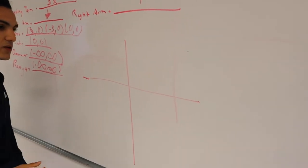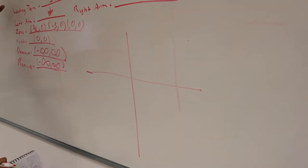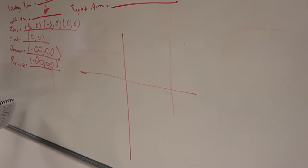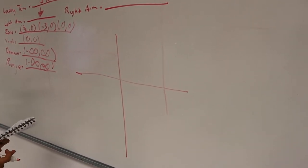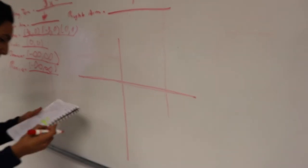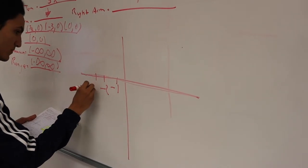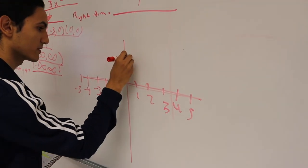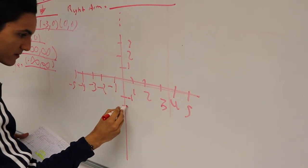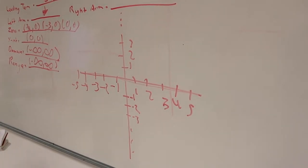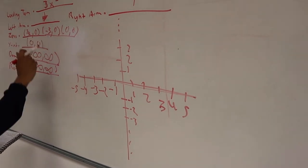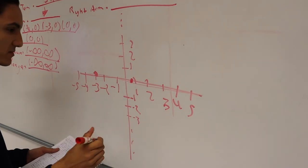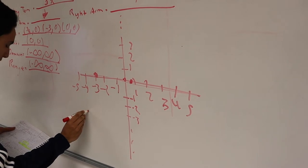Now it's time for the more difficult part: graphing. We need to take all the information we have to graph. The important thing about graphing is understanding how the peaks go and whether the right arm is up or down and the left arm is up or down. We start by labeling the axes with values: negative 5 through 5 on both axes. With the information we have, the x-intercepts are at negative 3, approximately two-thirds, and zero. The parabola goes accordingly based on those points.